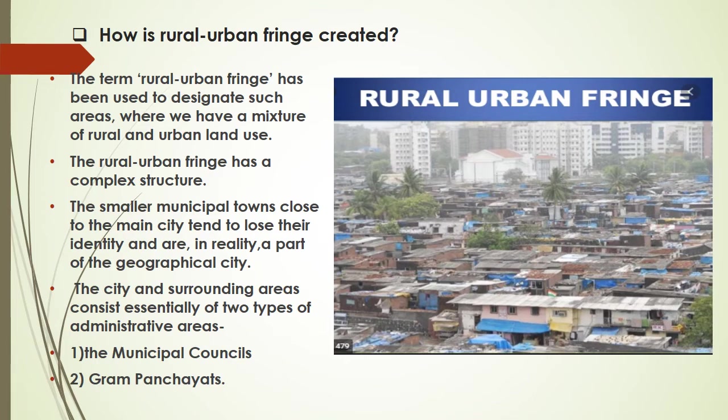The smaller municipal towns close to the main city tend to lose their identity and are in reality a part of the geographical city. So small towns start losing their identity when rural urban fringe is created. The city surrounding area consists essentially of two types of administrative areas: the municipal council or the gram panchayats.